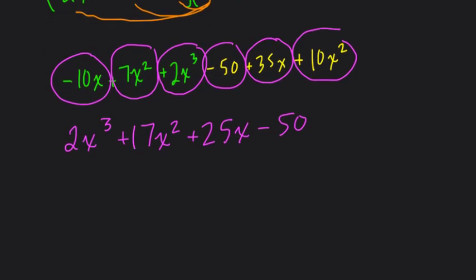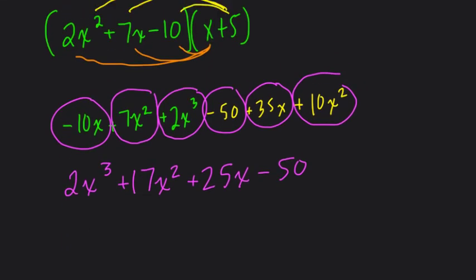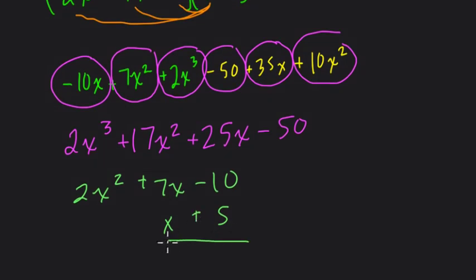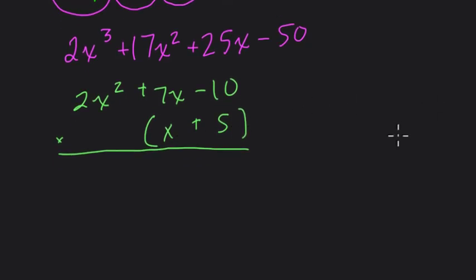If you didn't like that, another way you can set this up: write 2x squared plus 7x minus 10, then put the binomial underneath, line up the like terms, and multiply. Some people like this because they're used to stacking in multiplication. You do 5 times negative 10, 5 times 7x, and 5 times 2x squared. Then x times negative 10, x times 7x, and x times 2x squared. This will lead to the same result.